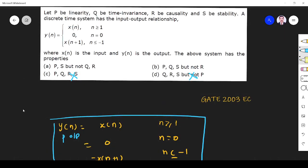So P is true, it is linear. S is false. P is true.